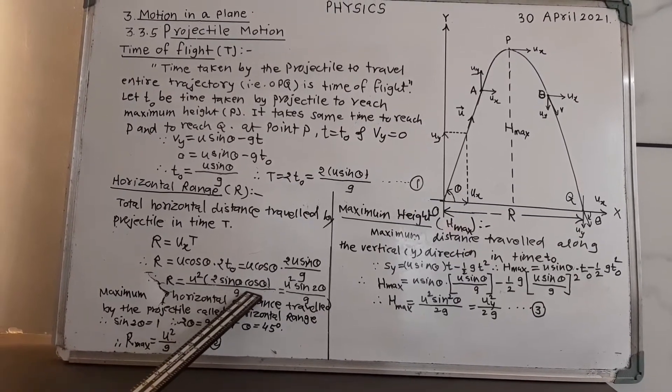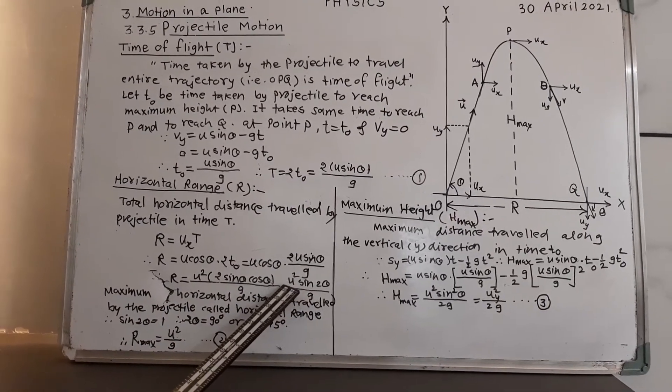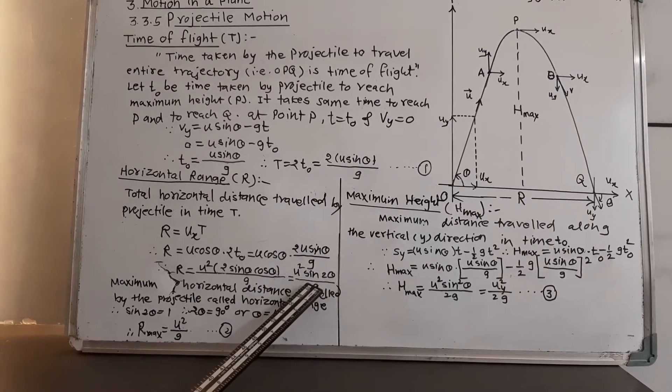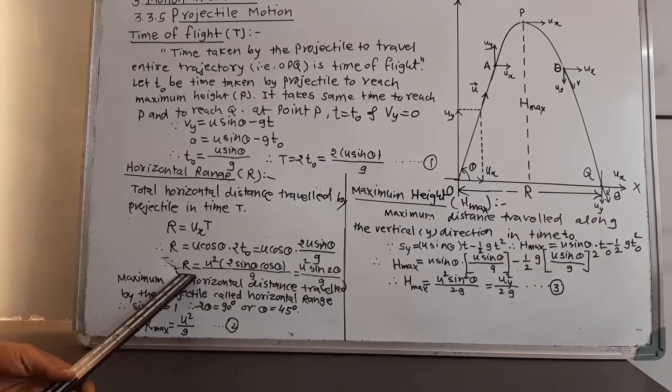Here, 2 sin theta cos theta is nothing but sin 2 theta according to our trigonometry. So, U square sin 2 theta upon G, which is the expression for the horizontal range capital R.